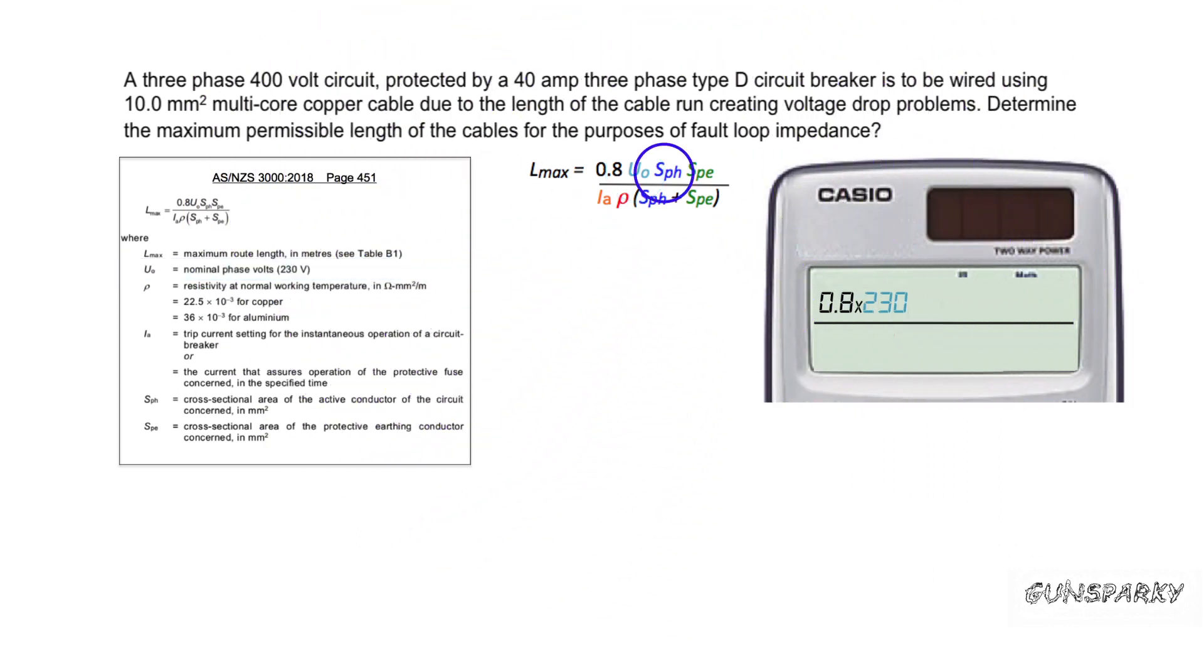Next, it's asking for the cross-sectional area of the active conductor. The answer to this is actually in the question itself.